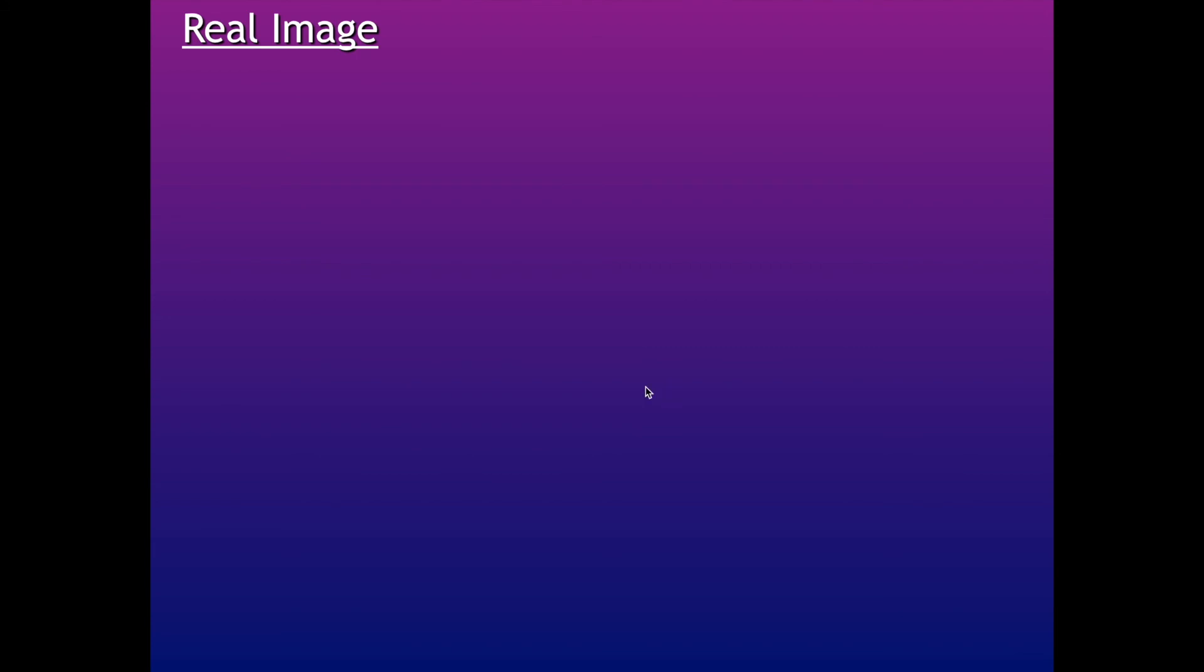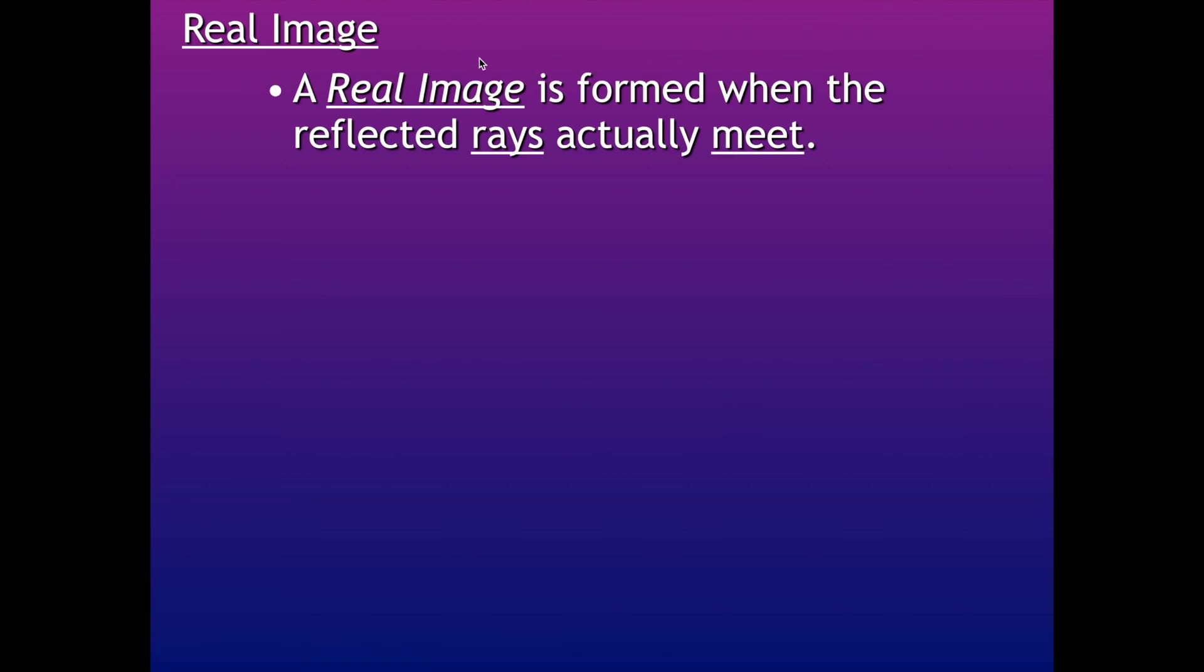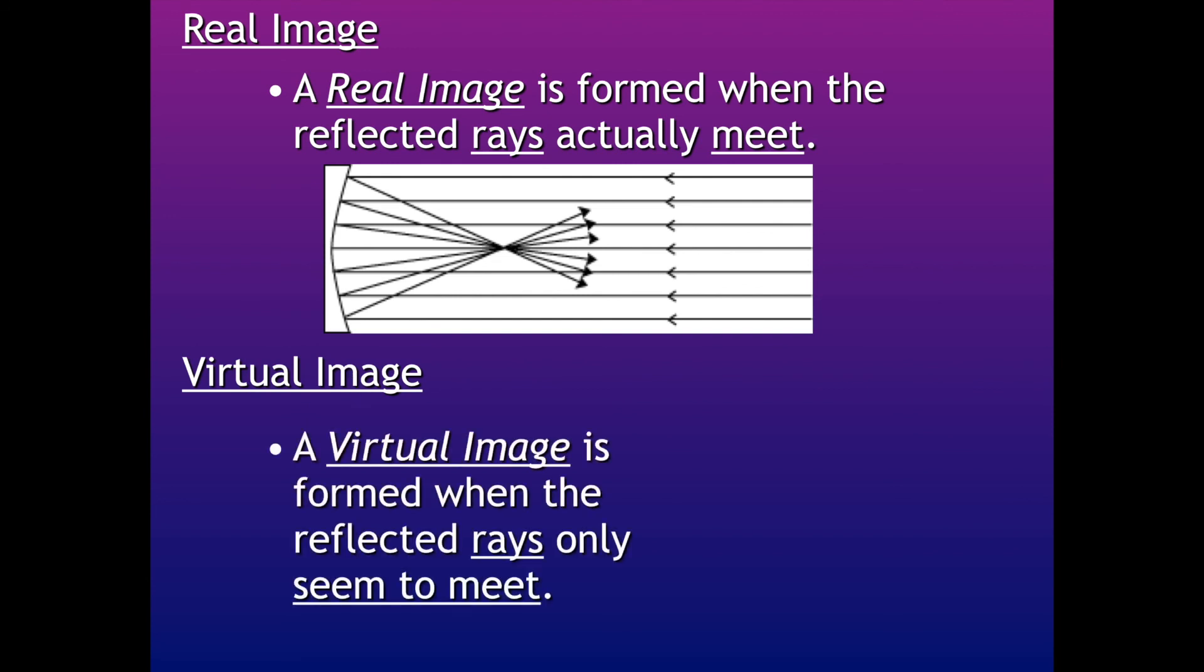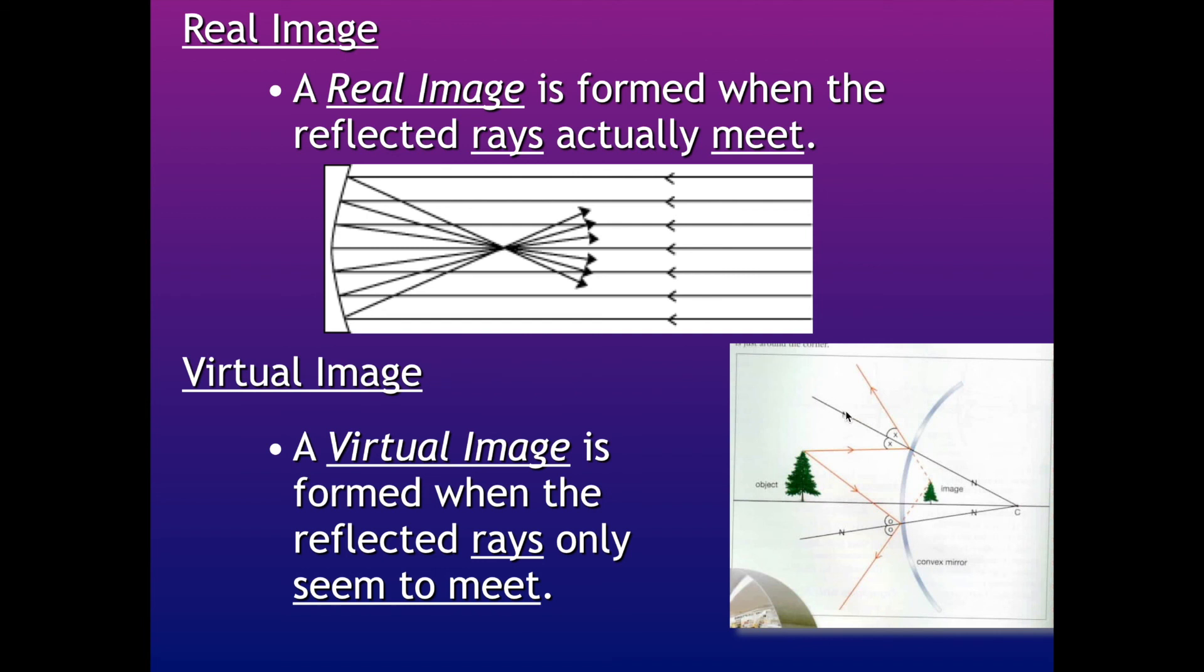Now, there's different types of images that are going to form. And with something called a real image, that image appears to look like it should. It doesn't really matter if it's right side up or upside down, but the light rays are actually going to meet in the case of a real image. So here's an example here. Anything on this side of the image is going to be a real image because the light rays have met. They converged at that point. So that could happen with a concave mirror. Now, next is a virtual image. And with a virtual image, the light rays don't actually meet. They just seem to meet and you have to follow them back to where they would meet. So an example would be like with the convex mirror. Those light rays spread out and we have the image forming where they would seem to meet because the light rays diverged.